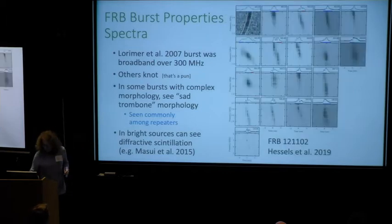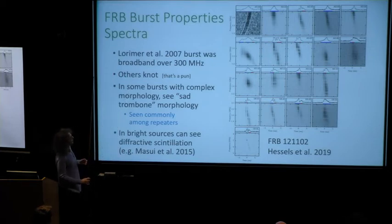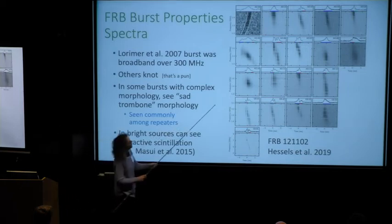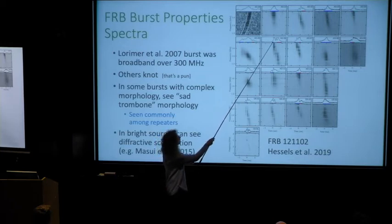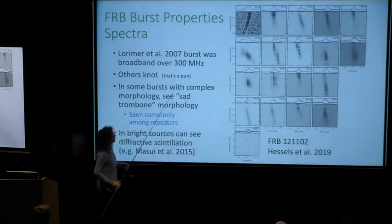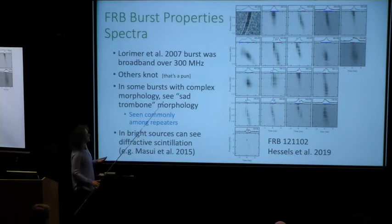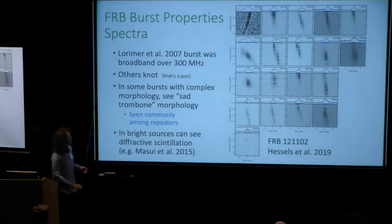You can see this even more in a montage of 121102 bursts. In some of these events, sub-bursts are time-ordered going downward in frequency — the so-called 'sad trombone' morphology. You see that fairly commonly, and we've seen it in other repeater bursts as well.